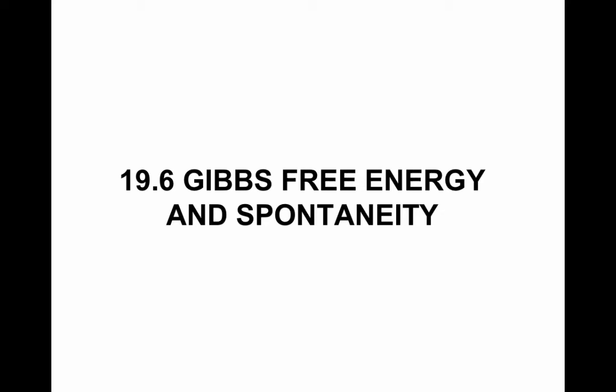This video is going to be on Gibbs free energy and determining spontaneity based on changes in delta G, delta H, and delta S. Just to review, Gibbs free energy is essentially a way to tell if a reaction or a certain process is spontaneous. Delta G could be referred to as the chemical potential, so the lower the potential, the more spontaneous the reaction will be. To tell if a reaction is spontaneous, you look to see if delta G is negative — if it's negative, it's spontaneous; if it is positive, it is not spontaneous; and if it is zero, it is at equilibrium.